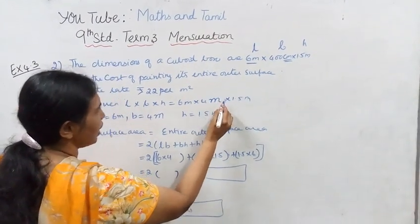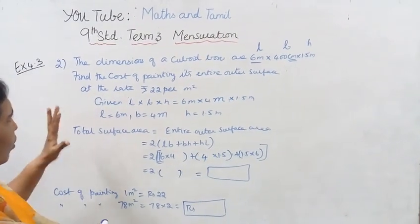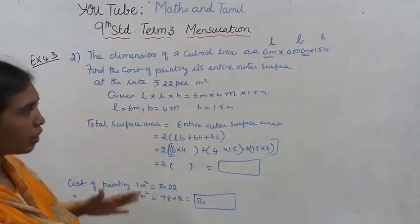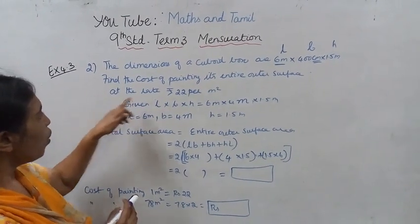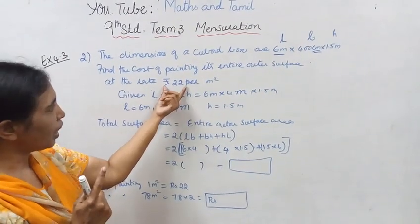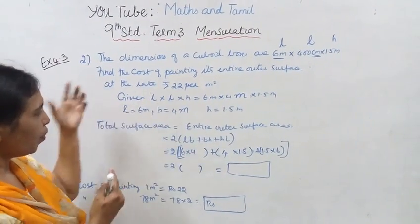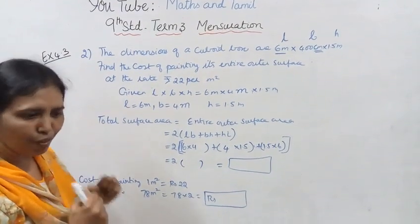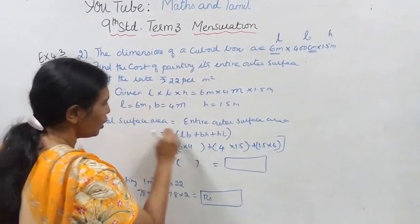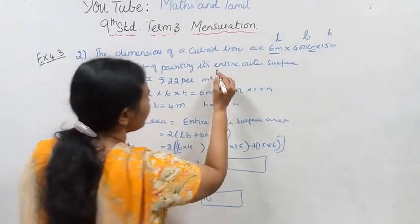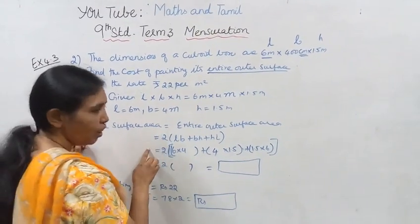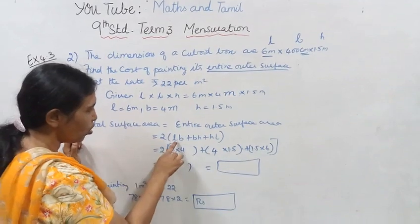We need to find the cost of painting its entire outer surface area. The box is fully painted at 22 rupees per meter square. First we need to find the total surface area. The formula for total surface area is 2 into LB plus BH plus HL.